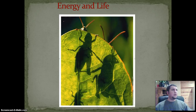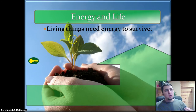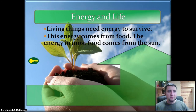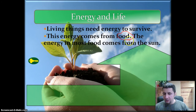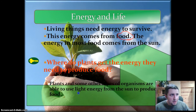Hi guys, this is Mr. Herbst here and today's focus is going to be on cell energy and life. All living things need energy to survive. Without that energy, they would be dead. Where does that energy come from? That energy comes from food. Ultimately, that food comes from the sun. Our key concept here is: where do plants get the energy they need to produce food? They get that energy from light — they get that energy from the sun.